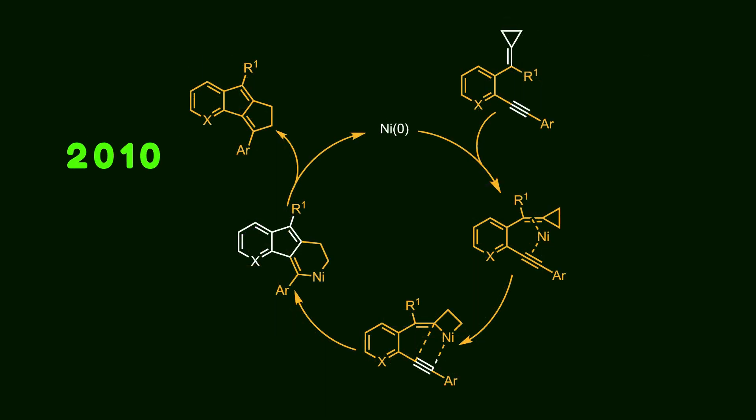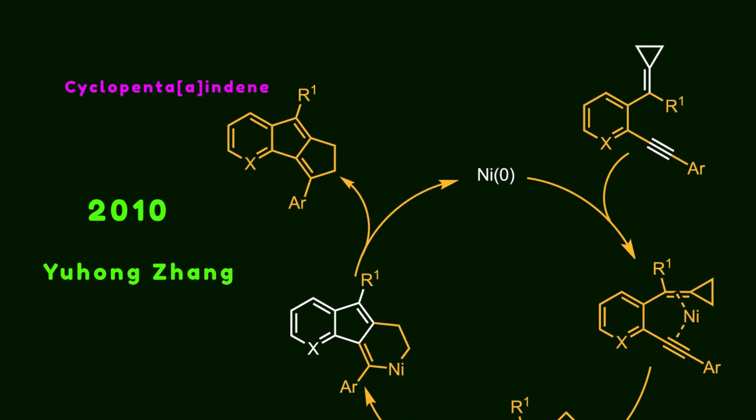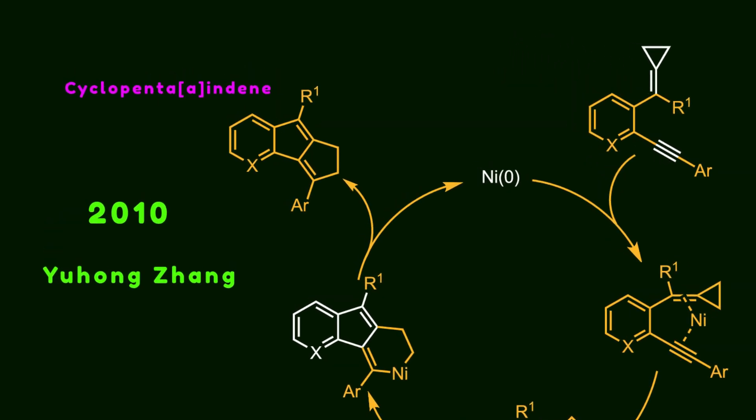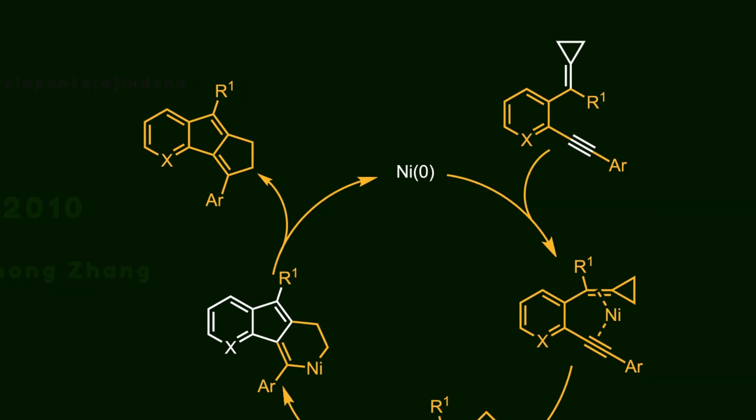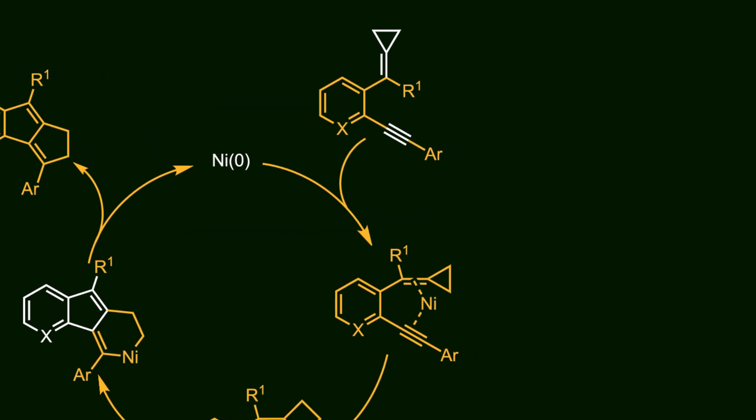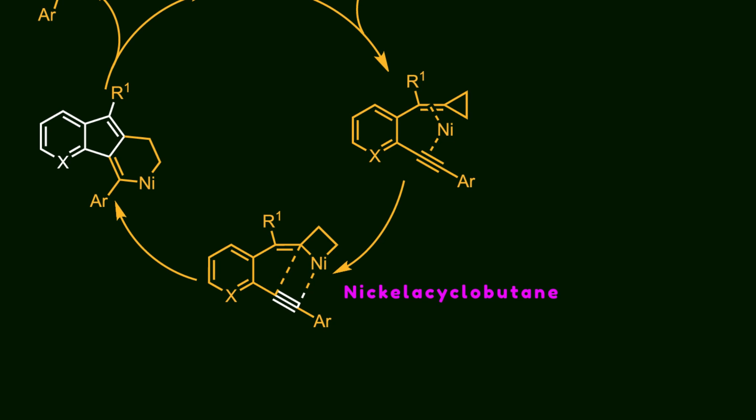In 2010, Jeon Group presented an interesting approach to creating valuable cyclopenta-indene derivatives via the proximal bond cleavage of alkylidene cyclopropane. In the first step, nickel inserts to the proximal bond, leading to the formation of the nickel-cyclobutene species.